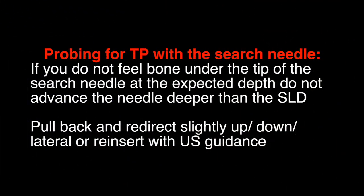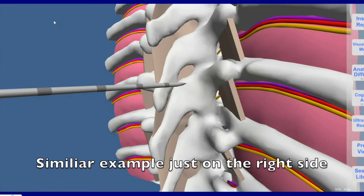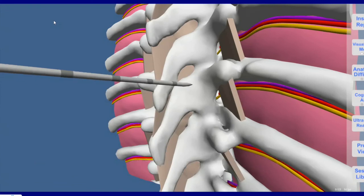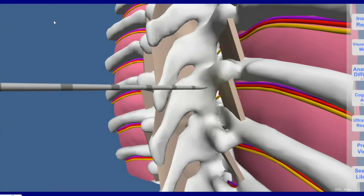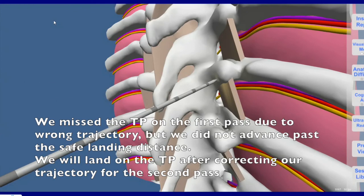If you do not feel bone under the tip of the search needle at the expected depth, do not advance the needle deeper than the SLD. Pull back and redirect slightly up, down, lateral, or reinsert with ultrasound guidance. We missed the TP on the first pass due to the wrong trajectory, but we did not advance past the safe landing distance. We will land on the TP after correcting our trajectory for the second pass.